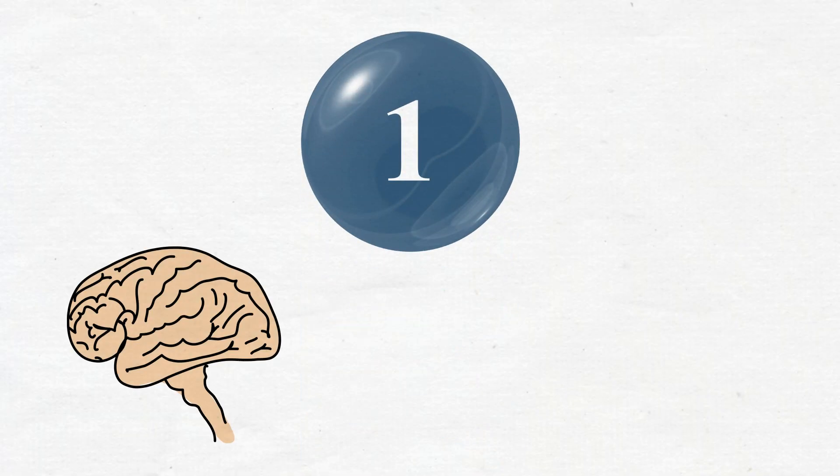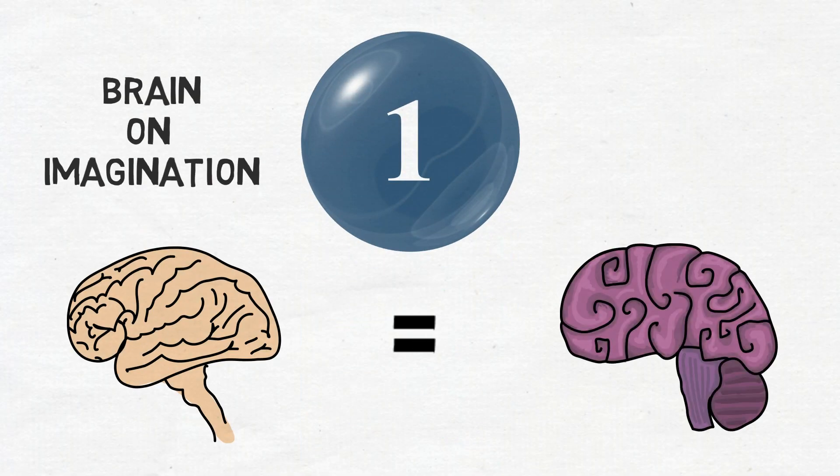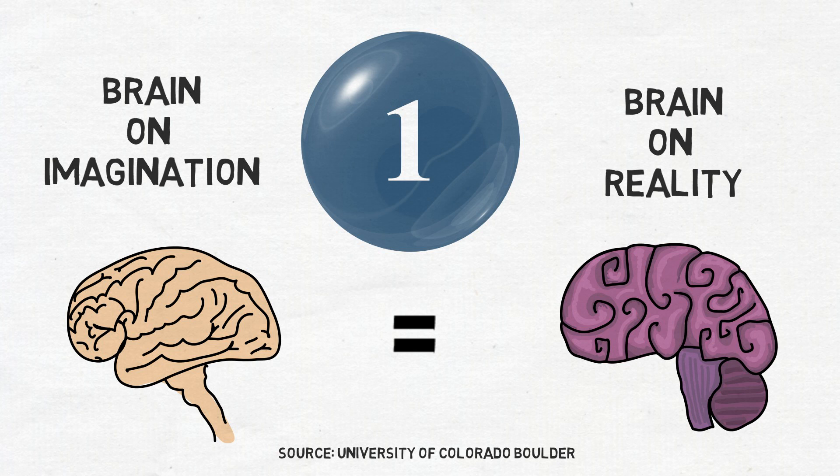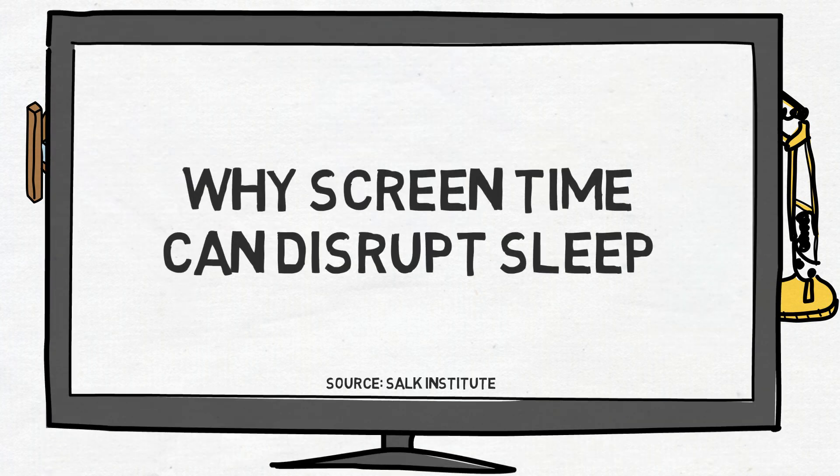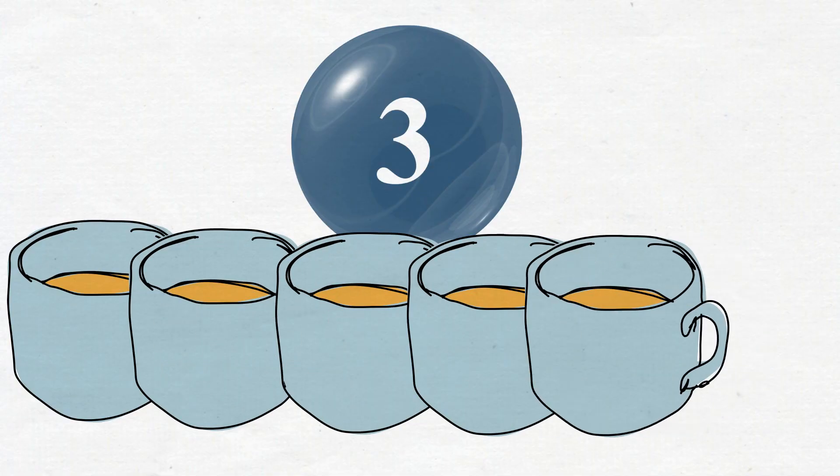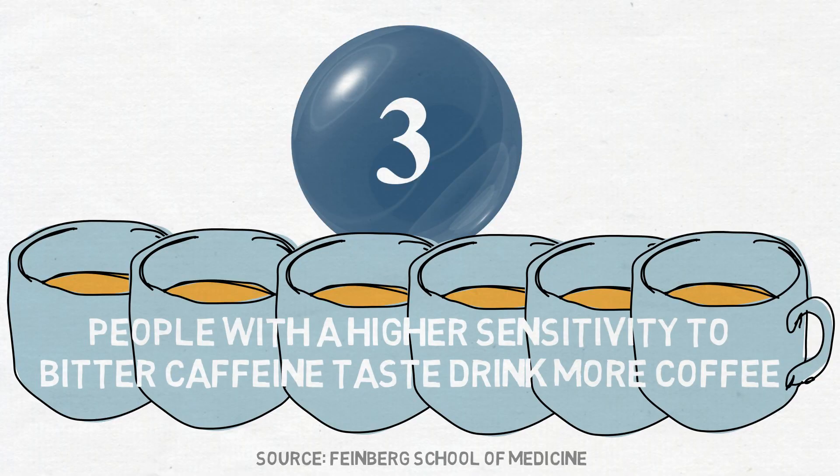For today I picked three of them and they go something like this: our brain on imagination is very similar to our brain on reality. Second thing, if you have a hard time sleeping this year, now more than ever you can blame it on artificial light sources. And third of all...